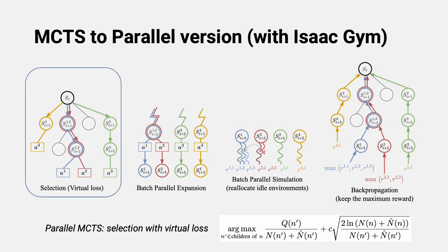With virtual loss, multiple leaf nodes can be selected simultaneously. After many pairs of leaf nodes and actions are selected, we group them as a large batch and run the physics simulation in parallel, generating a group of child nodes.